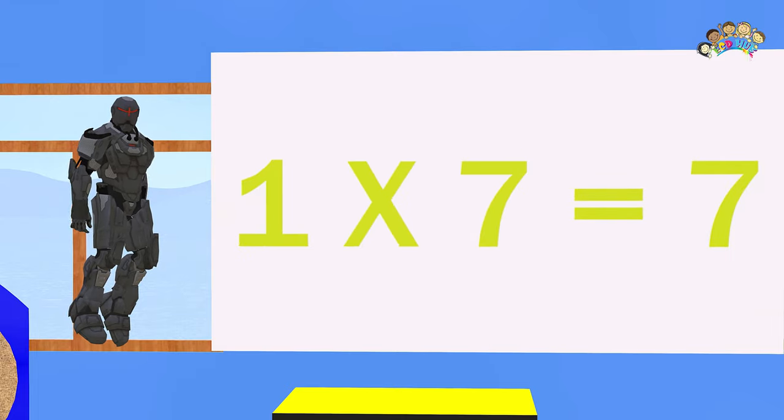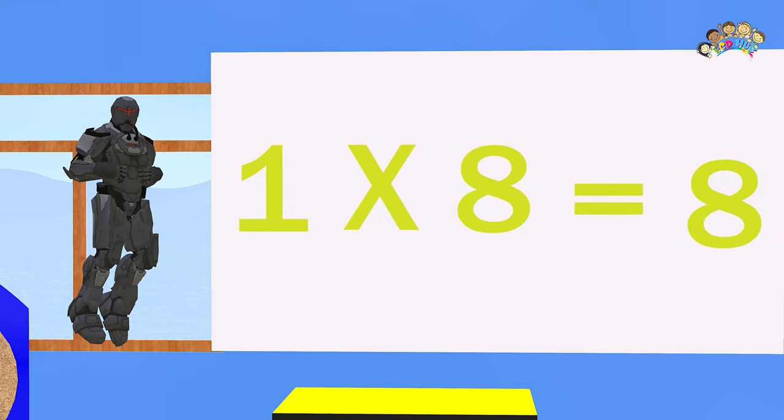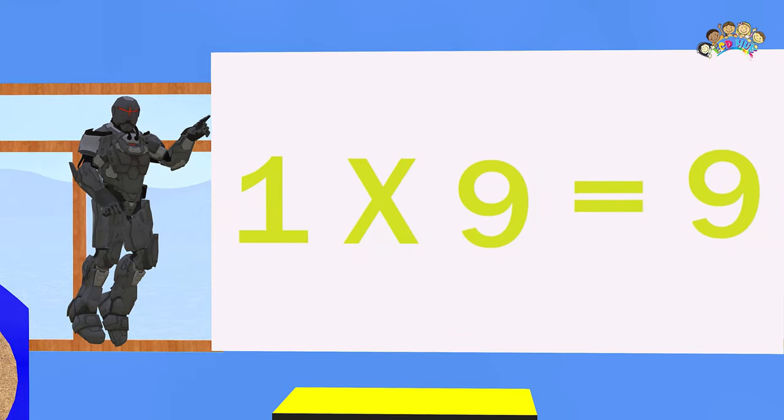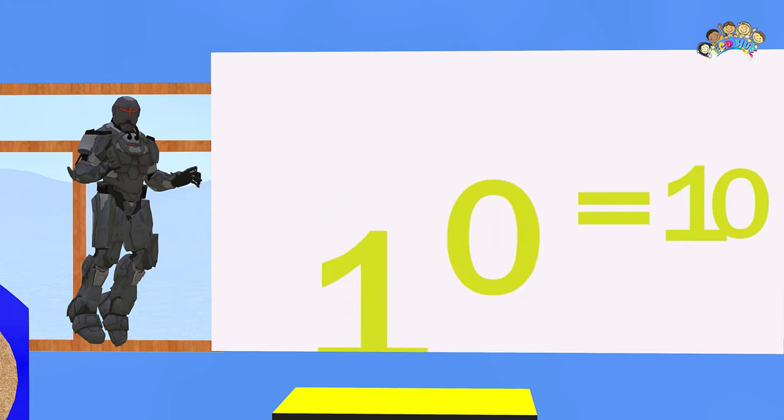One times seven equals seven. One times eight equals eight. One times nine equals nine. One times ten equals ten. As you may have realized, anything times one is that number. Remember that.